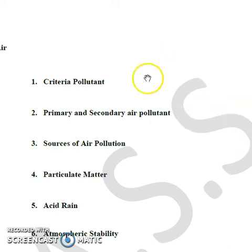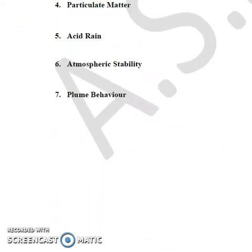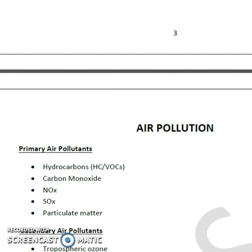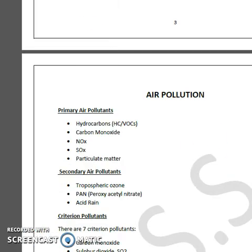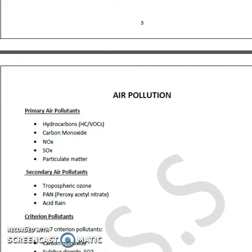As all of you know, the air pollutants can be classified. As mentioned in our literature, these pollutants — primary air pollutants — are substances like hydrocarbons, sometimes also referred to as VOCs. Second, CO, which is carbon monoxide. Third, that is NOx, which is an indeterminate mixture of NO and NO2.